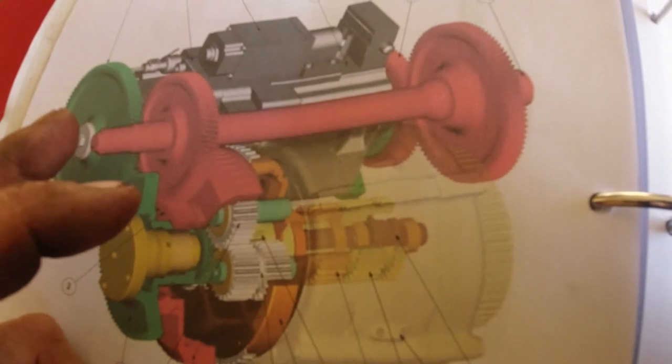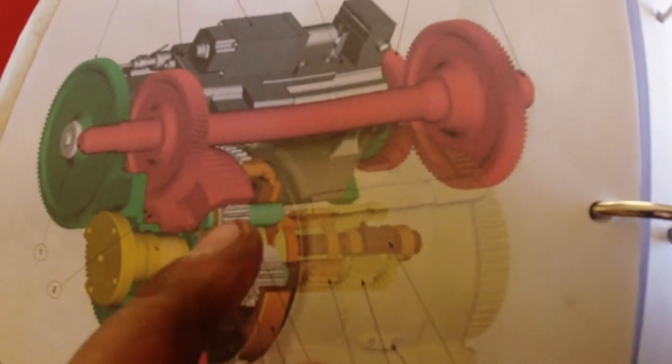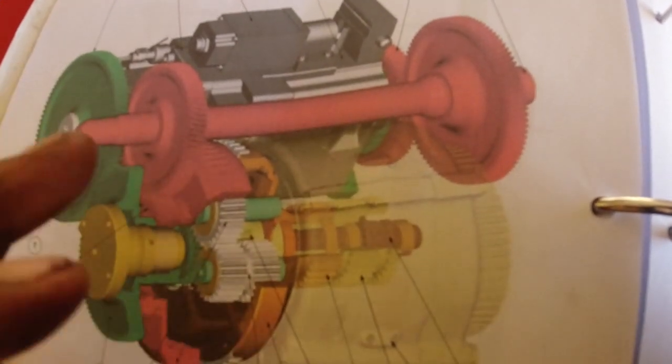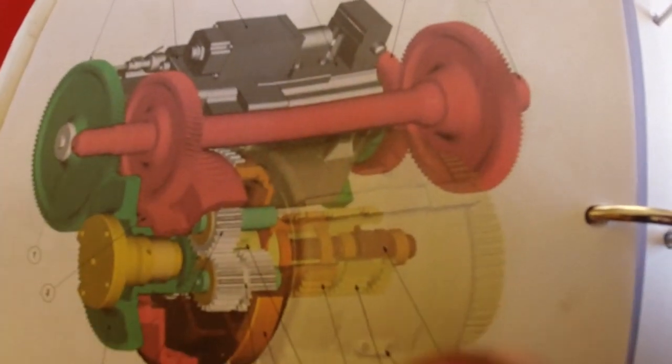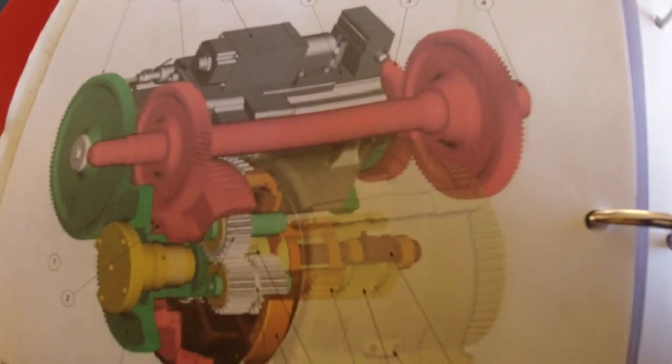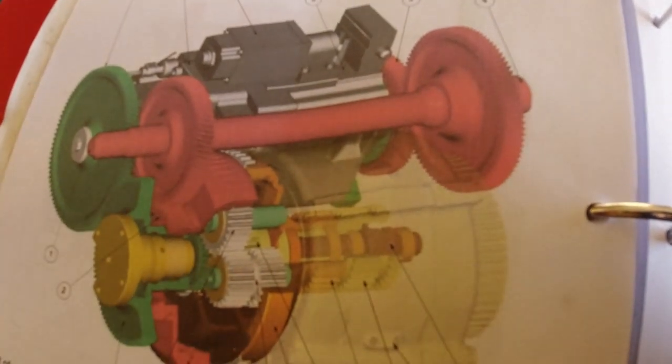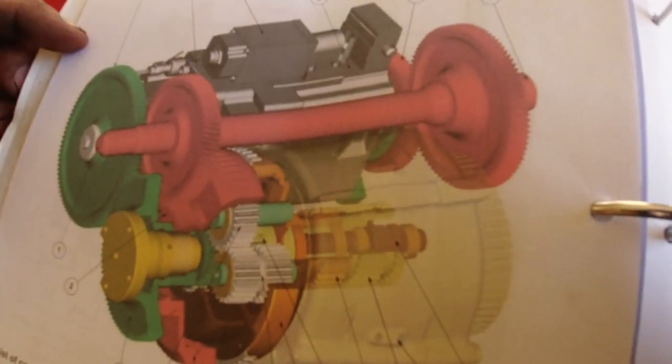This is also a Vario transmission, which means your speed is infinitely variable from zero to around 50 kilometers an hour. That means there is absolutely no interruption in drive from zero to 50. You can infinitely change that without an interruption. So basically there's two main features in these transmissions. These were the first of these transmissions.